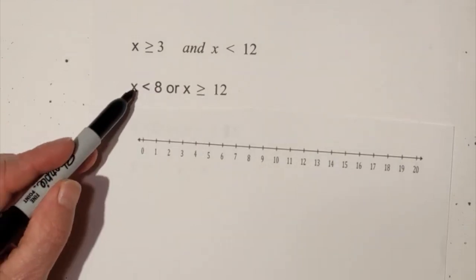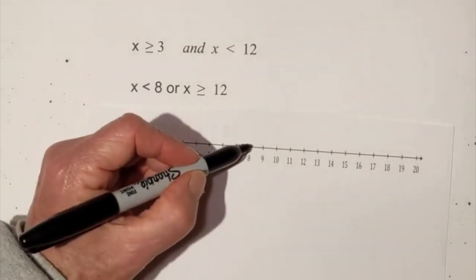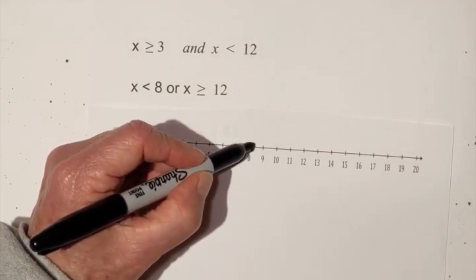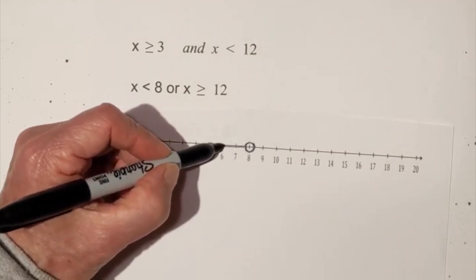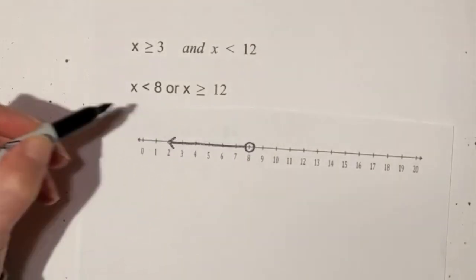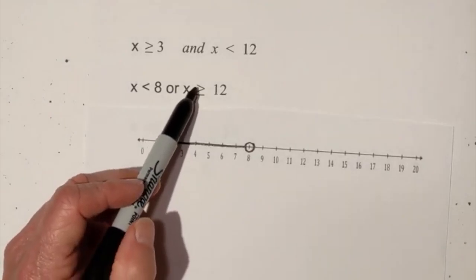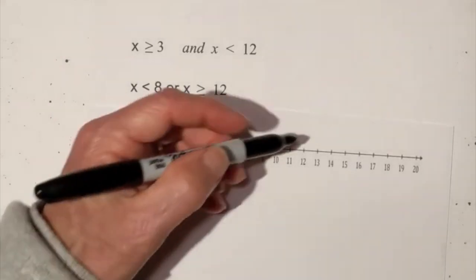So let's plot this. First let's do less than 8 so it is circle, remember it does not include 8 like the crime scene you can't go in there, and then at the same time it's greater than and equal to 12.